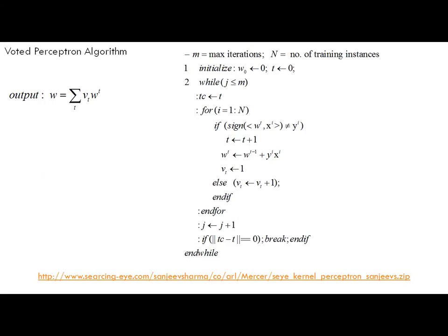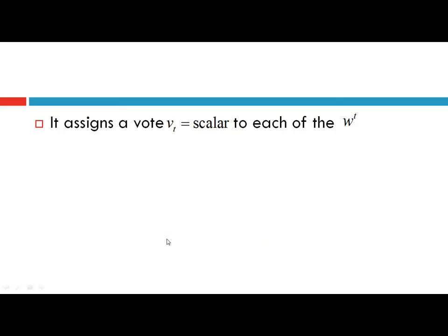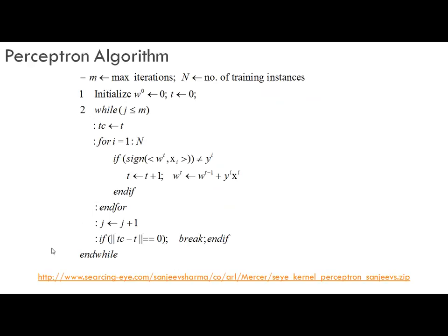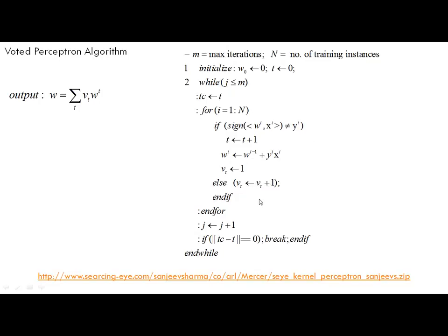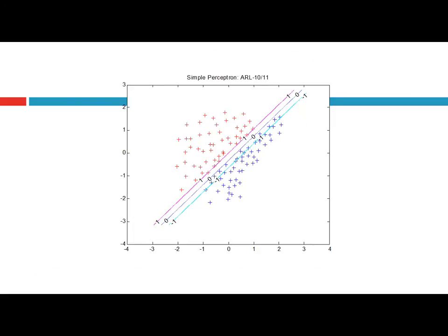This is the voted perceptron learning algorithm. The only difference from the perceptron learning algorithm is that it assigns a vote to each weight vector wt. If no error occurs, the vote is increased by one for the current weight vector wt, and the final weight vector W is given as the voted sum of all weight vectors wt encountered during the learning process. Here is again the link for downloading the code for simple perceptron, voted perceptron, and current perceptron learning algorithms. This is the decision boundary for the considered dataset using the simple perceptron learning algorithm.